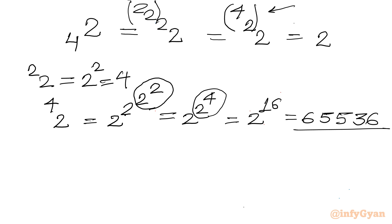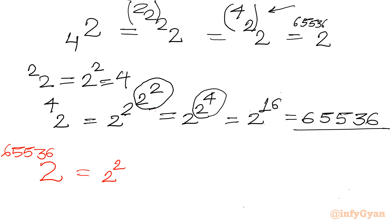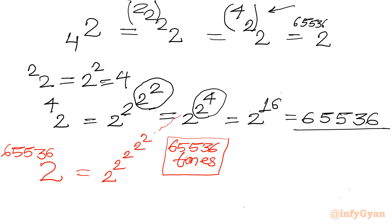So 2 super-power 65536 means 2 is going to repeat itself exponentially 65536 times — that is, 2 power 2 power 2 power... 65536 times. You can imagine this number will be very, very, very big. If you use a calculator, you won't get any answer from it because that number will be extremely large.